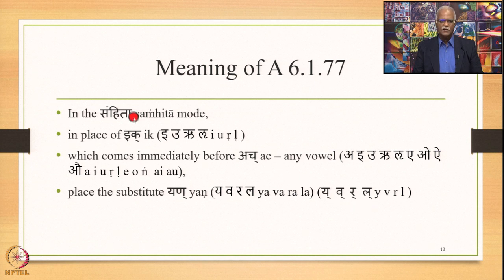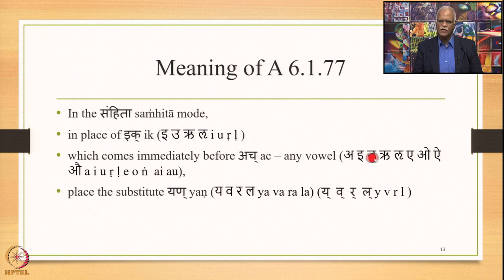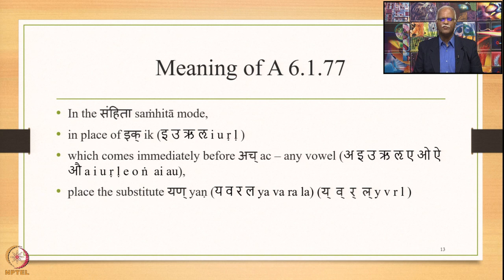In the Samhita mode, in place of Ikk — E, U, Ru and Lu — which comes immediately before Ach, so any one of them can come before any one of the Ach vowels A, E, U, Ru, Lu, A, O, I and Au, then in place of this Ikk place the substitute Yan, one of the four: Y, V, R and L. This is the expanded meaning of 6.177.